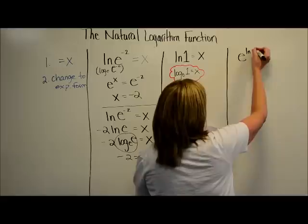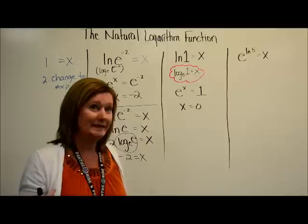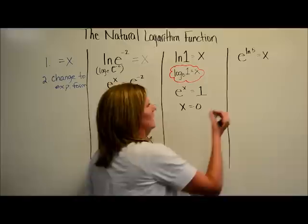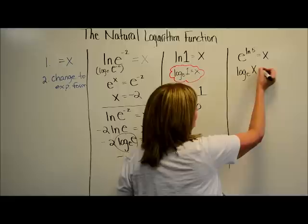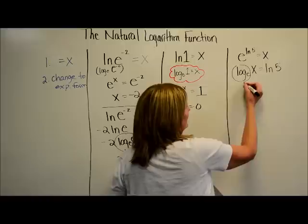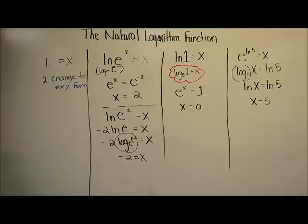Here's another type: E to the natural log of 5 equals x. This time it's in exponential form, so I'm going to shift back to logarithmic form. I have log base E of x equals ln 5. Since I have ln here and ln there — and they match — x equals 5.